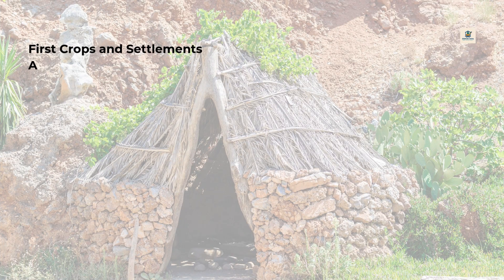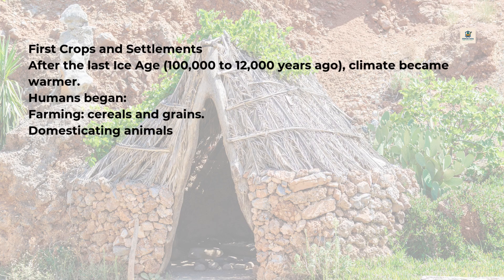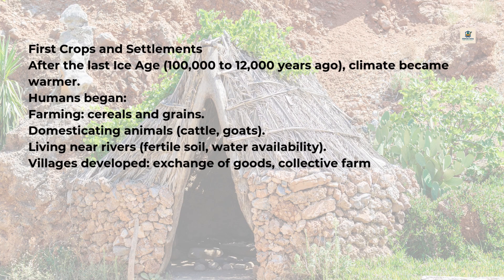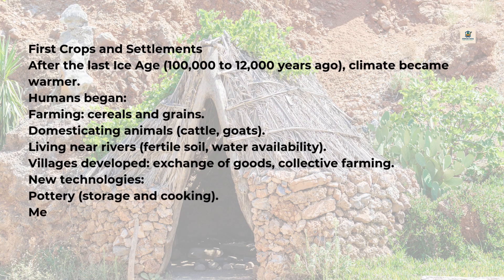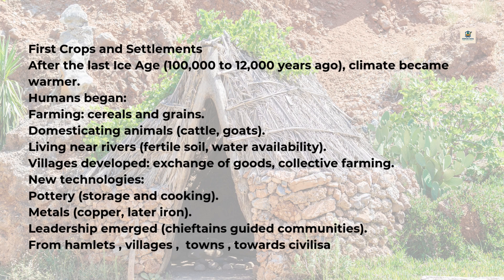First crops and settlements: after the last ice age, which lasted from 100,000 to 12,000 years ago, the climate became warmer. Humans began farming cereals and grains, domesticating animals like cattle and goats, and living near rivers for fertile soil and water. Villages developed with exchange of goods and collective farming. New technologies emerged — pottery for storage and cooking, and metals like copper and later iron. Leadership emerged as chieftains guided communities, leading from hamlets to villages to towns, towards civilizations.